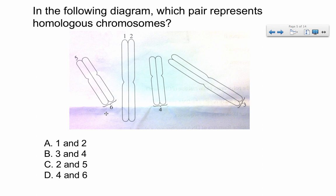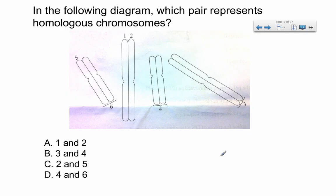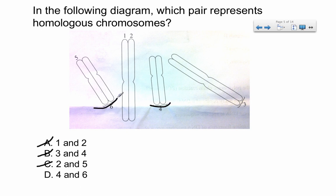So which are homologous chromosomes? Homologous chromosomes should match in shape, size, and the location of their genes. One and two — that's not it, those are two sister chromatids of the same chromosome. Three and four: three is one chromosome with two sister chromatids, four is another chromosome with two sister chromatids, but they are not homologous because they're not the same size and length — so three and four are out. Two and five seems totally wrong as well. Four and six: four is one chromosome, six is another chromosome, and they look to be the same size — that represents homologous chromosomes.